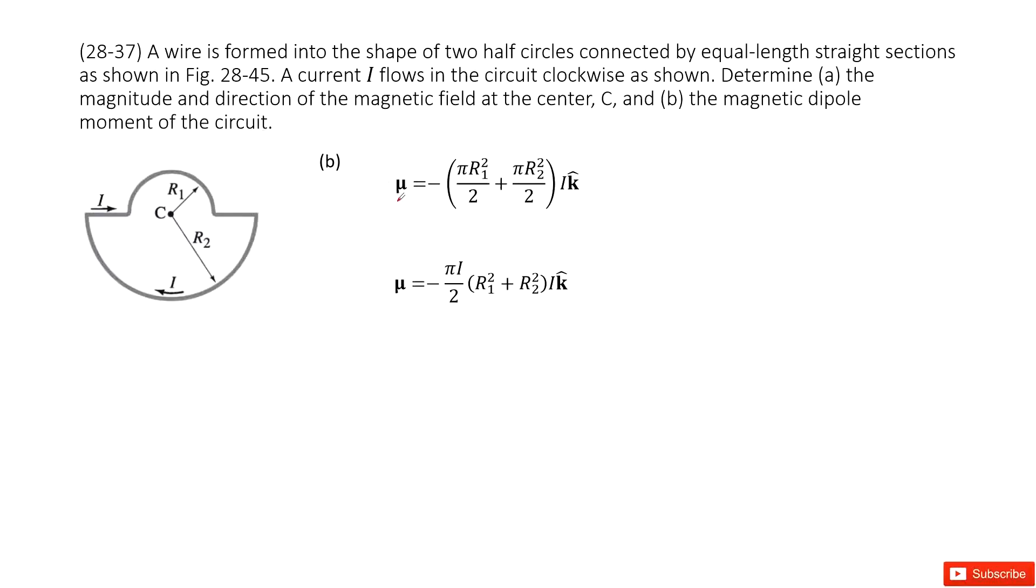As we can see, magnetic dipole moment is the current I times the cross sectional area, right? So this one, we can get it as πR1² divided by 2, πR2² divided by 2. And then direction is negative k̂. So finally, we get answer there. Thank you.